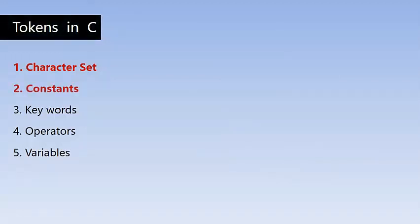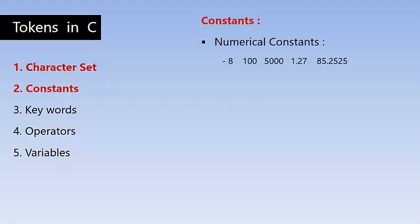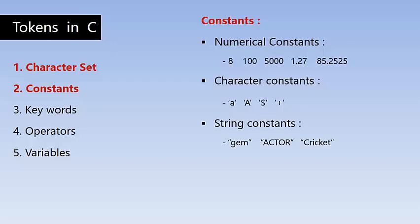Constants are literals which do not change their values at any point in the program. First, numerical constants — these are numbers that include integers and real numbers, positive or negative. For example: -8, 100, 5000, 1.27, 85.2525 are all numerical constants. We also have character constants: 'A', '$', '+' — they have fixed values and fixed names that do not change anywhere in the program. String constants are a group of characters and should be enclosed within double quotes, while a character constant is enclosed in single quotes.